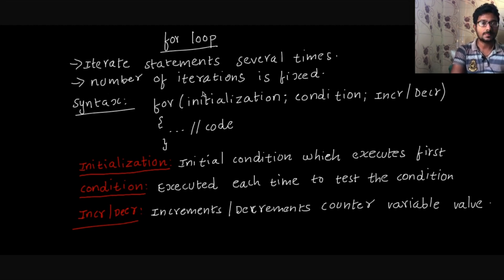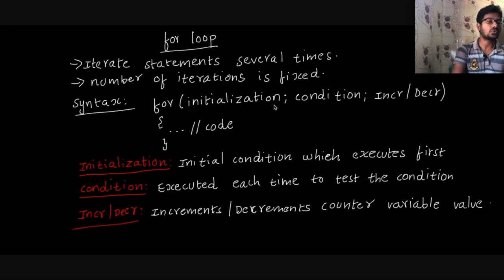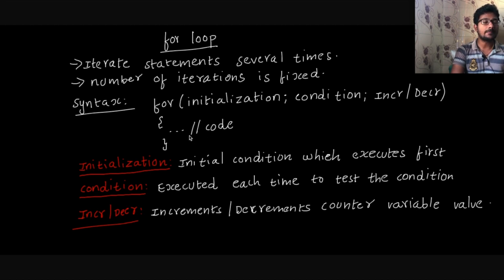The number of iterations is fixed. The syntax is: for loop with initialization code, condition code, and increment or decrement code, then open brace and close brace. We can execute the for-loop using this structure.